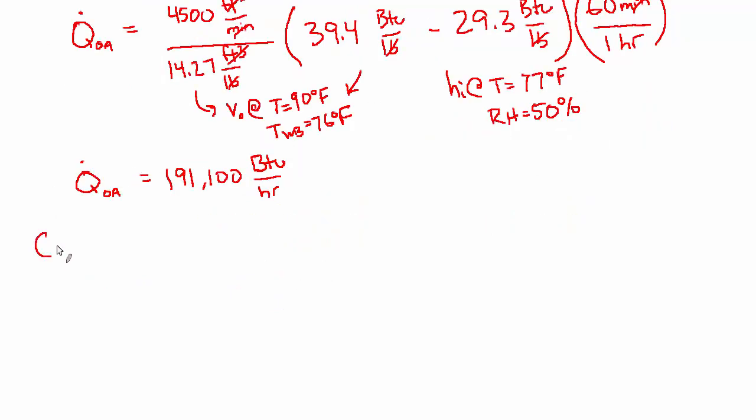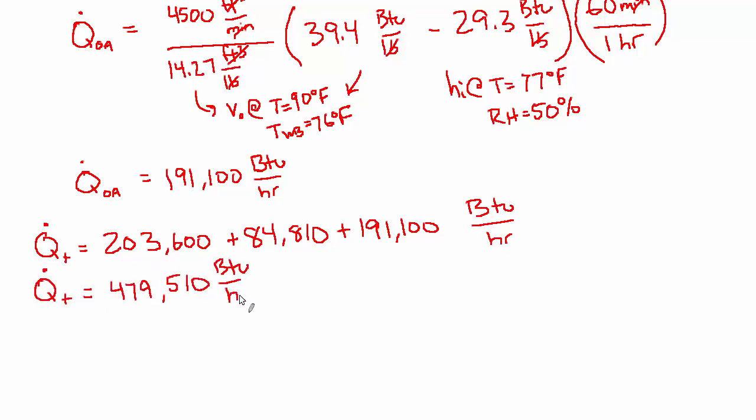Let's add them all together. Q total is the sensible 203,600 plus the latent 84,810 plus this outside air piece, 191,100. And all of those have units of BTUs per hour. So the total is 479,000 BTUs per hour.